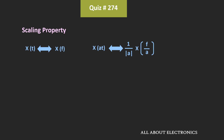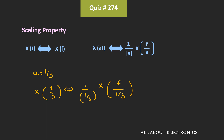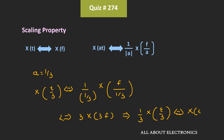If you are aware about the scaling property, then according to the scaling property, if X(f) is the Fourier transform of the signal x(t), then for the signal x(at), the Fourier transform can be given by that expression. So, let's assume that A is equal to 1/3. That means the Fourier transform of x(t/3) will be equal to 3·X(3f). Or we can say that the Fourier transform of x(t/3) is equal to X(3f).